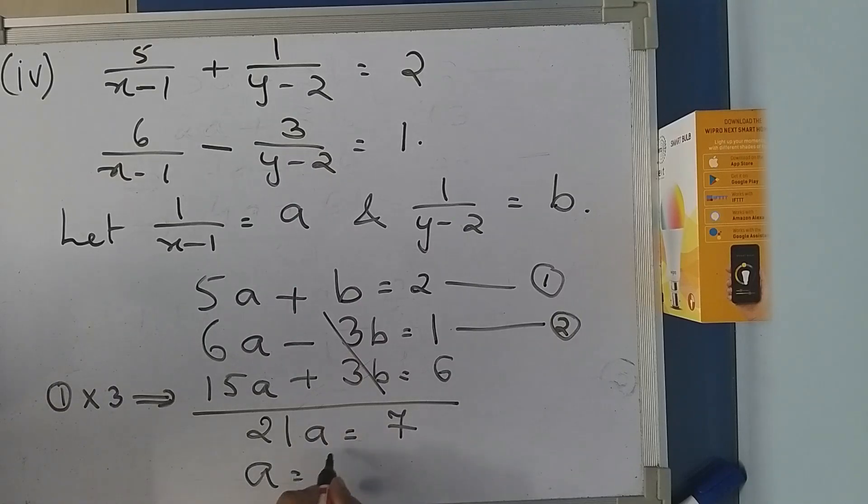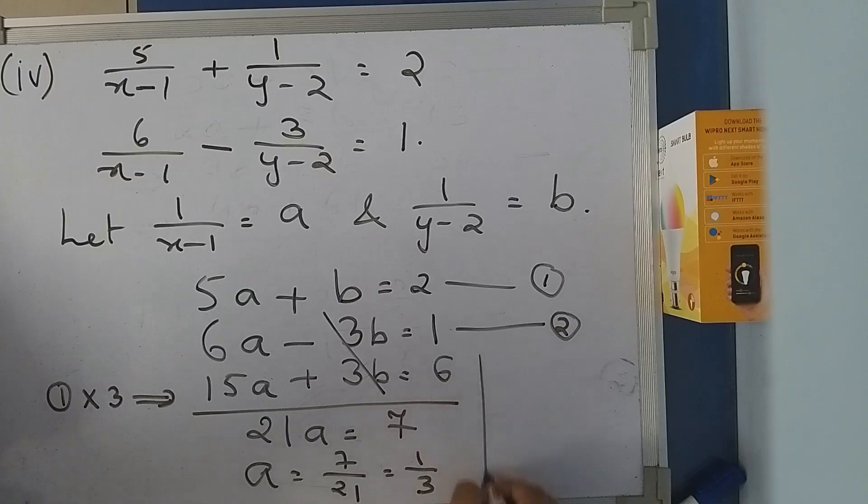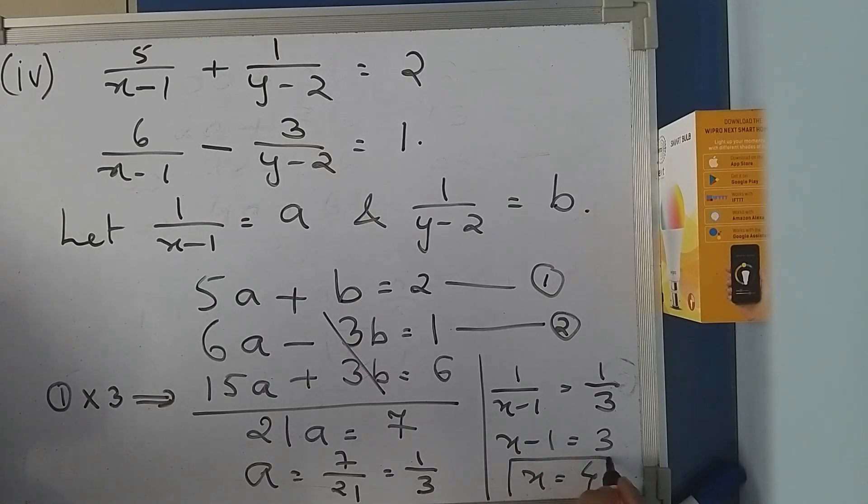So you are getting A = 7/21, that is 1/3. So A, which is 1/(x-1), equals 1/3. Therefore x-1 = 3. Thus x = 3 + 1 = 4.